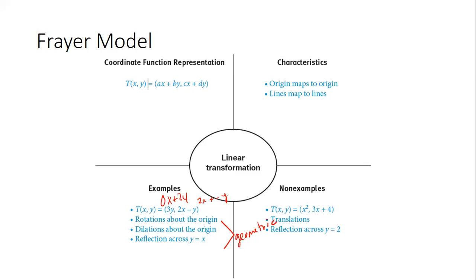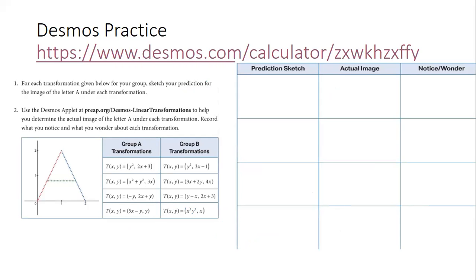You're going to use your Frayer model and your knowledge of what we just talked about and do a discovery activity. You have transformations given, and you're going to select four that you think are examples of linear transformations. Number them one through eight, select the four you think are linear, and make predictions of what the transformation is going to look like.